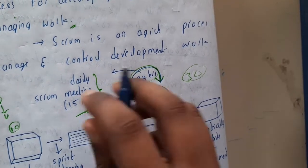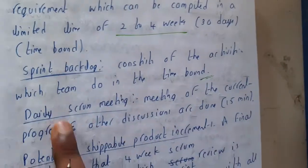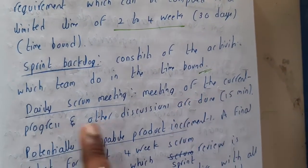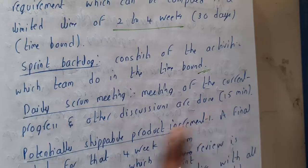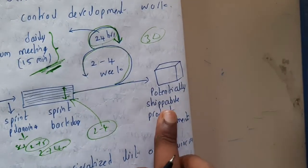That is the reason why the meetings are done to verify everything. Daily scrum meetings of the current progress and other discussions are done for around 15 minutes, and at the end you will be getting the potentially shippable product increment.